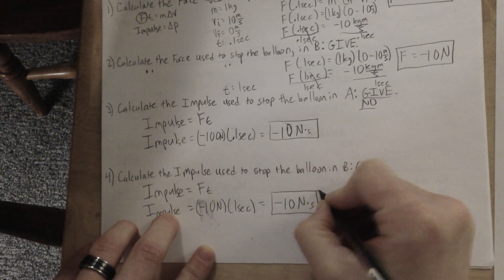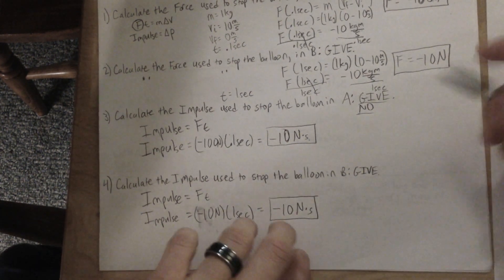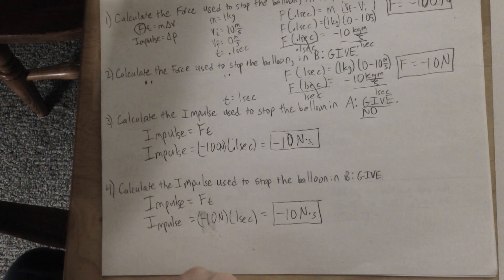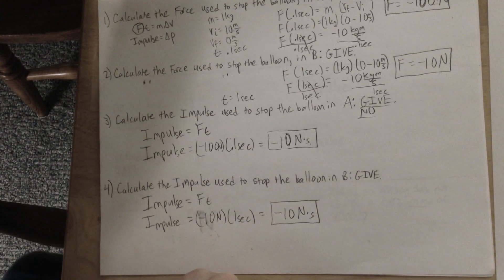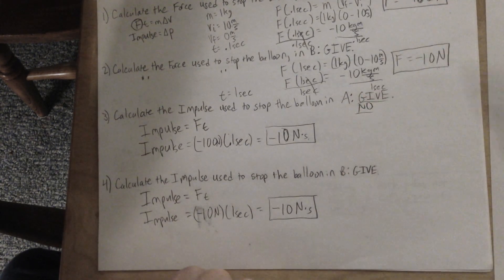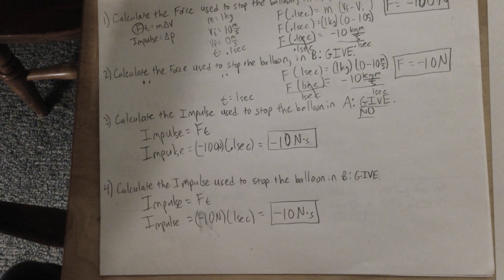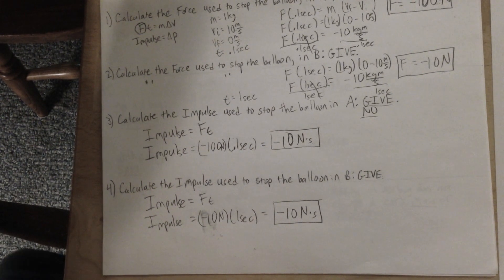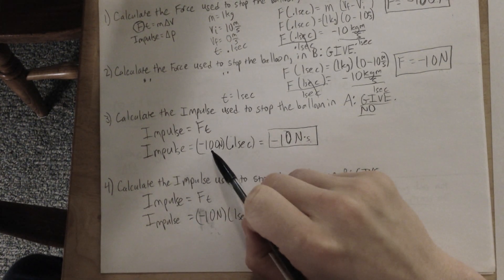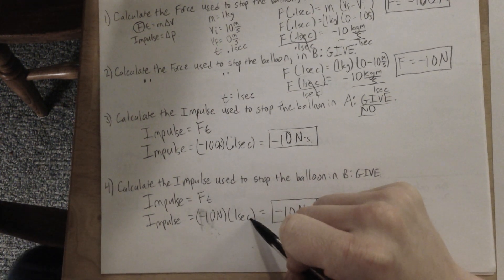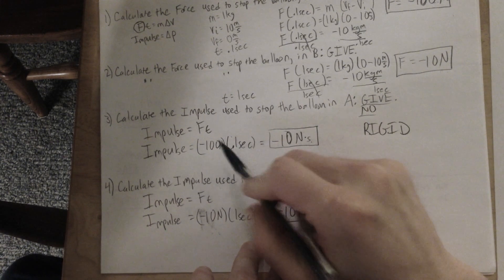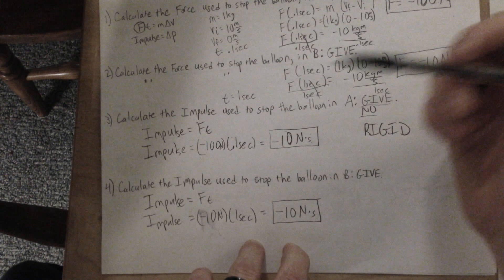The interesting result is that giving or not giving produces the same impulse — negative 10 newton-seconds either way. The reason is that the balloon comes in with the same momentum of 10 kilogram-meters per second regardless. Giving with it doesn't change the incoming momentum, so it doesn't change the impulse needed to stop it. What giving does is reduce the force while increasing the time. Holding hands rigid means less contact time but more force. Either way, force and time multiply to give the same impulse.